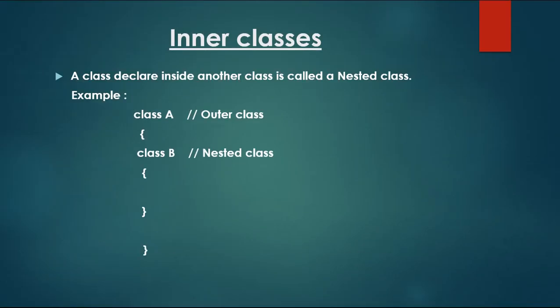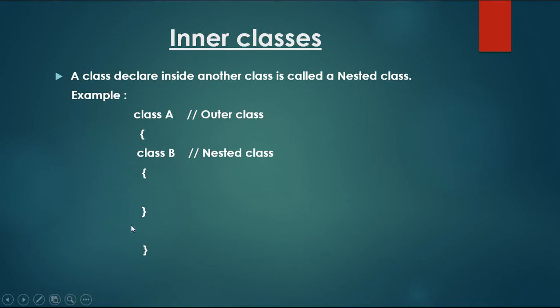Before going to the topic called inner classes, we have to know something about what do you mean by a nested class in Java. A nested class is nothing but a class which is declared inside another class. In this example you can see there are two classes present, class A and class B. Class B is present inside class A, that means class B is declared inside of class A. Otherwise we can say that class B is the nested class and class A is the outer class.